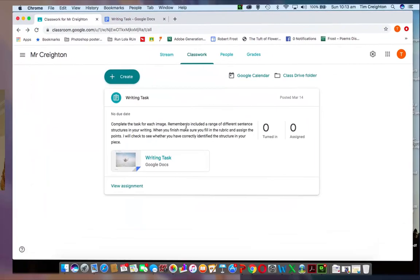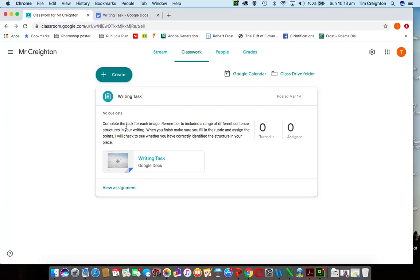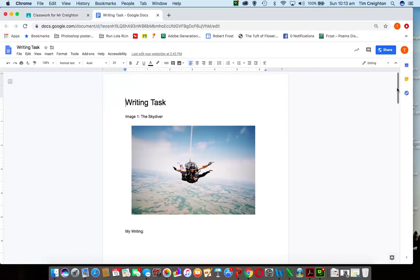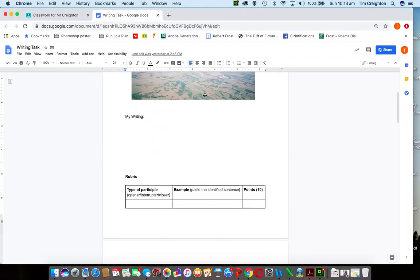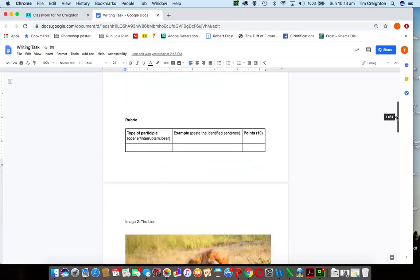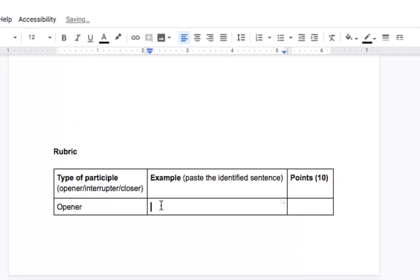So you can see here I've posted it to you. Complete the task, include a range of different sentence structures, etc. So you can read those instructions but let's have a look at what it actually looks like. So there's the skydiver. I want you to do your few sentences on that, describing it or being inspired by that, and here's your rubric. You simply say, oh I used an opener here, and then you would give me what it is from your writing.